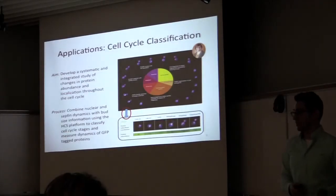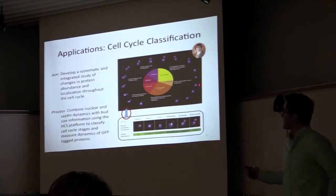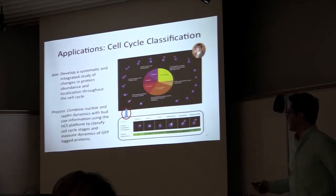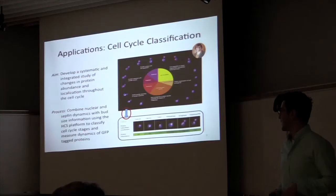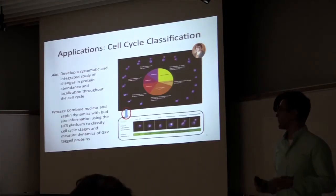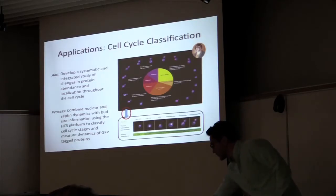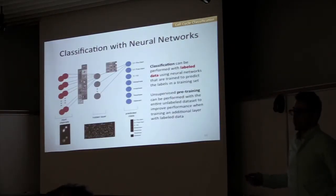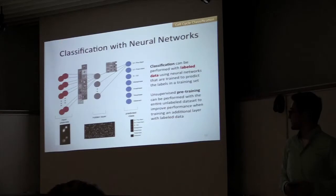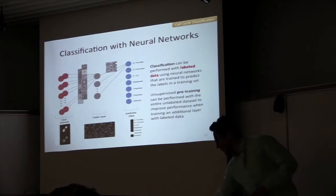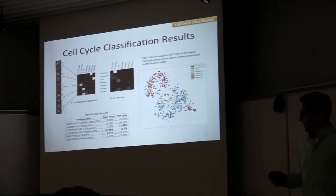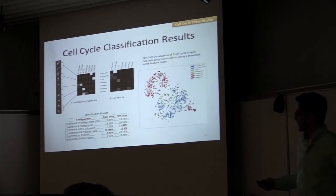I'll talk about a few examples of how to use these techniques. One application from my group is a project by Ben Gris, where he's using markers for nuclear regions, receptive regions, and cytoplasmic regions to classify cell cycle stage, and is interested in studying how different proteins fluctuate throughout the cell cycle. For this project, I've added a classification layer on top of the feature layer, where different images need to be classified as belonging to one of six cell cycle classes, plus an additional class for cells that weren't segmented properly.